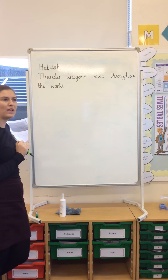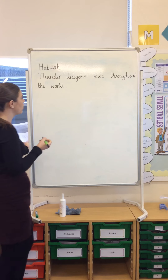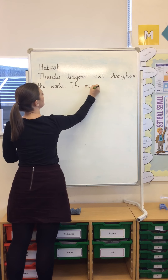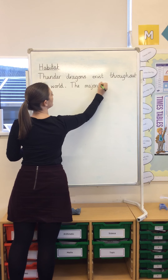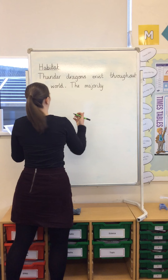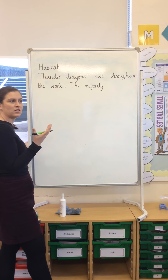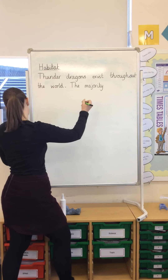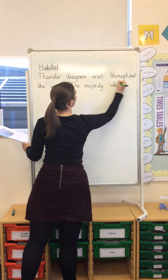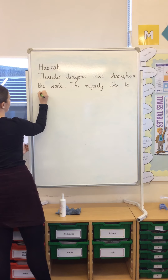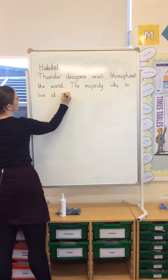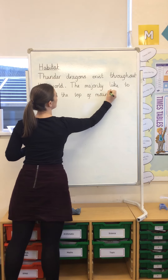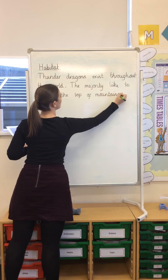With the original text, we were using a lot of generalisers and they said that the majority like to do something. So maybe I'll magpie that idea. I'm going to use the generaliser 'the majority,' which means most. I wrote on mine that they like to live in mountains, so maybe I'm going to add extra detail to say where on mountains — maybe at the top of mountains. So: the majority like to live at the top of mountains. Full stop.